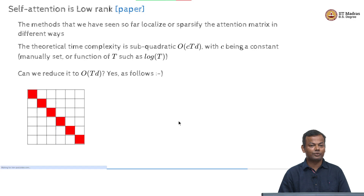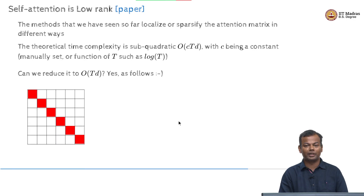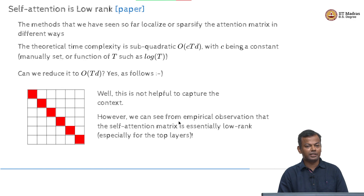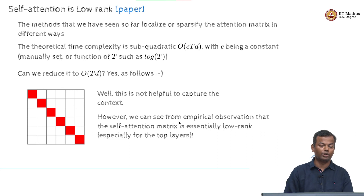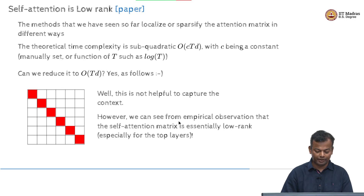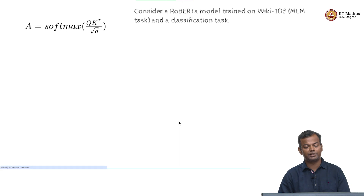Yes, but not in a very useful way. You could just have every token attend to itself, but that does not help in any way. So we would want something where we reduce the complexity but are mindful about what computations we are ignoring. And here there was this empirical observation that the self-attention matrix is essentially a low rank matrix.